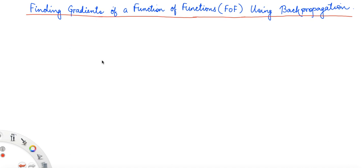In deep learning, we often encounter functions of functions and we need to take gradients to update the parameters. Using backpropagation, we can easily find gradients of such complicated functions. Now let's start.